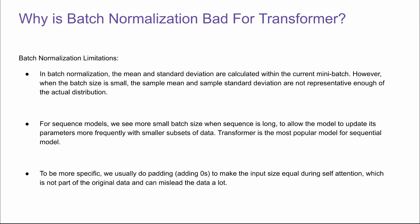So why is batch normalization not used for transformers? Batch normalization has its own limitations. The mean and standard deviation are calculated within the current mini batch. However, when the batch size is small, the sample mean and standard deviation are not representative enough of the actual distribution. For sequential models, we see more smaller batch sizes because the sequence is very long. The transformer is very popular among sequential models and usually has small batch sizes, so batch normalization doesn't work very well. More specifically, we usually do padding — adding zeros to make sure input sizes are consistent during self-attention — which is not part of the original data and can mislead the model a lot.